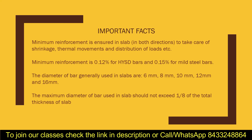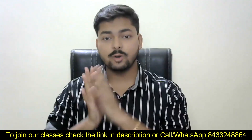In general, the bar diameters used in slabs are 6 mm, 8 mm, 10 mm, 12 mm, and 16 mm. For the maximum diameter of the bar, you can calculate it by dividing the overall depth of the slab by 8. For example, for an overall depth of 120 mm, the maximum bar diameter should not exceed 1/8th of the overall slab depth.